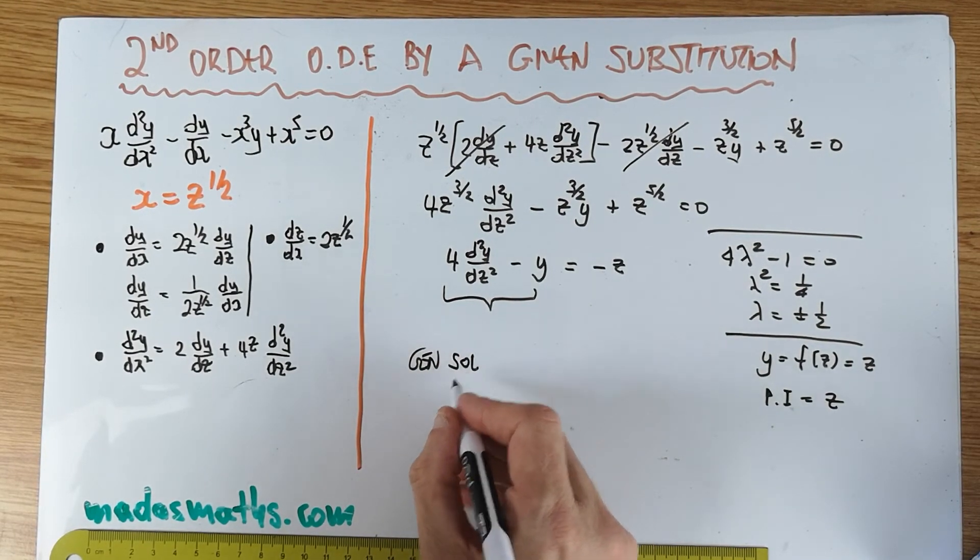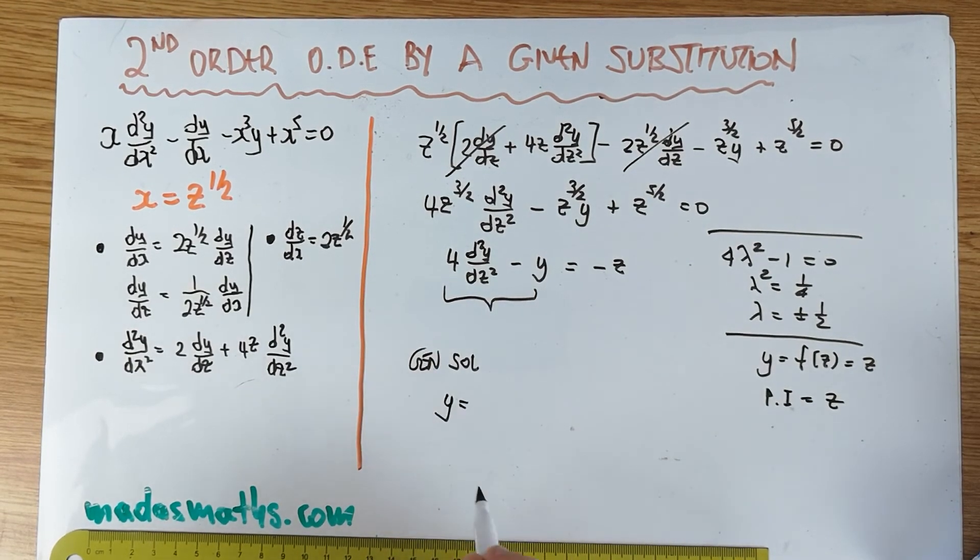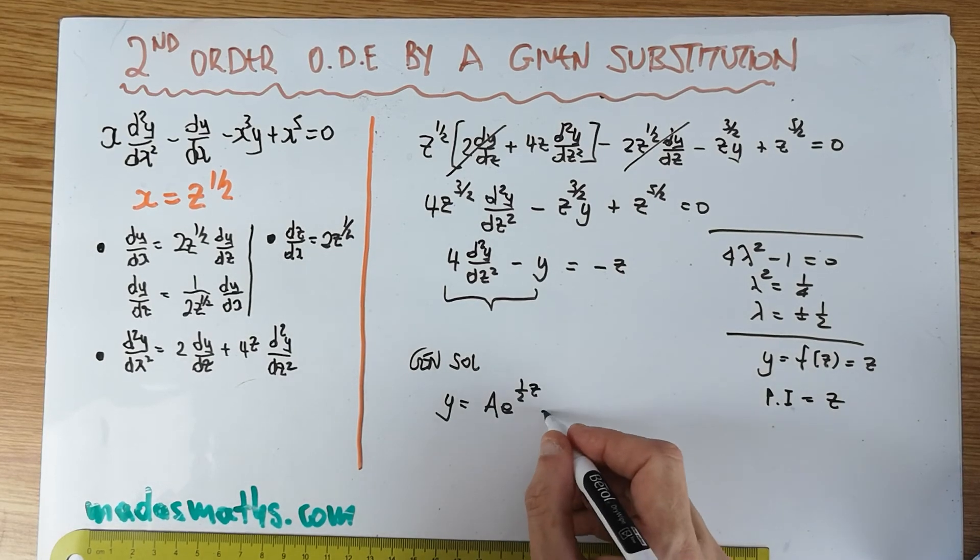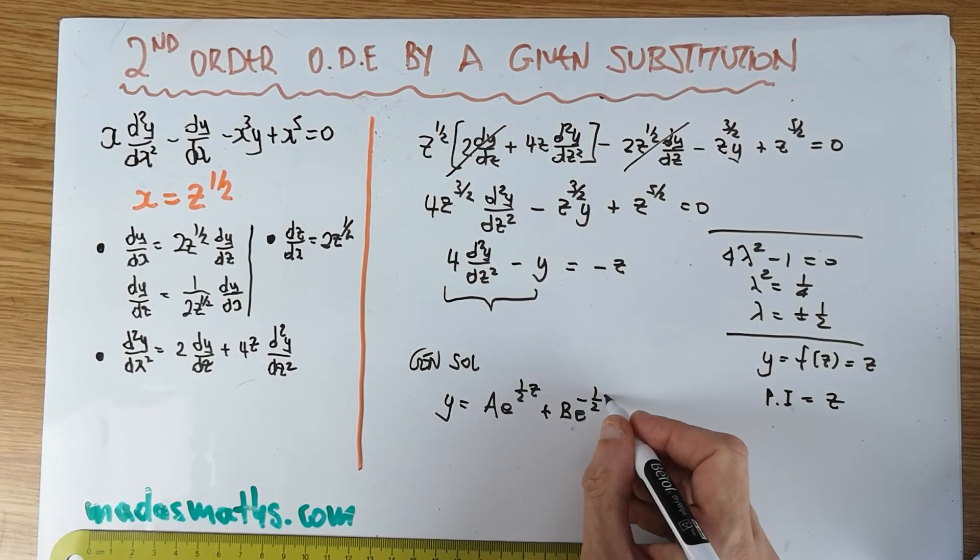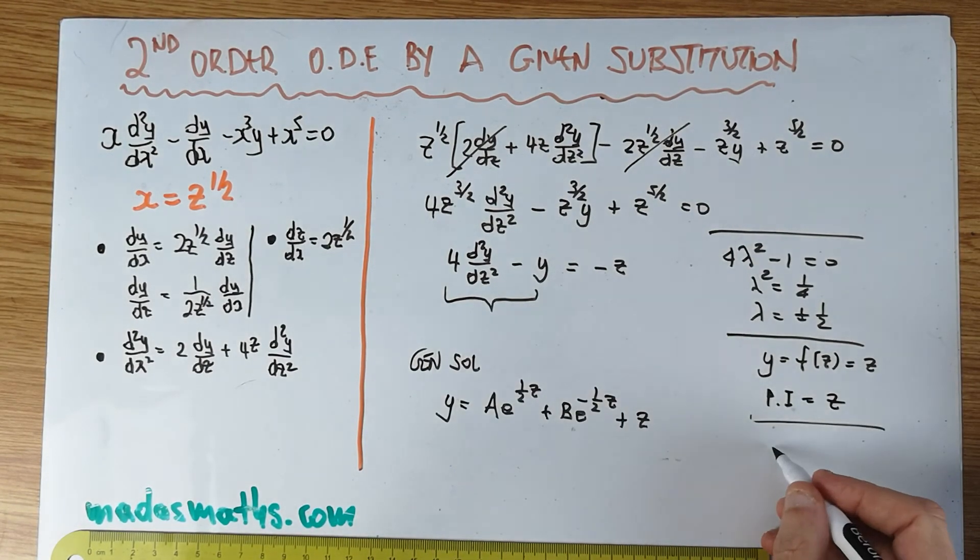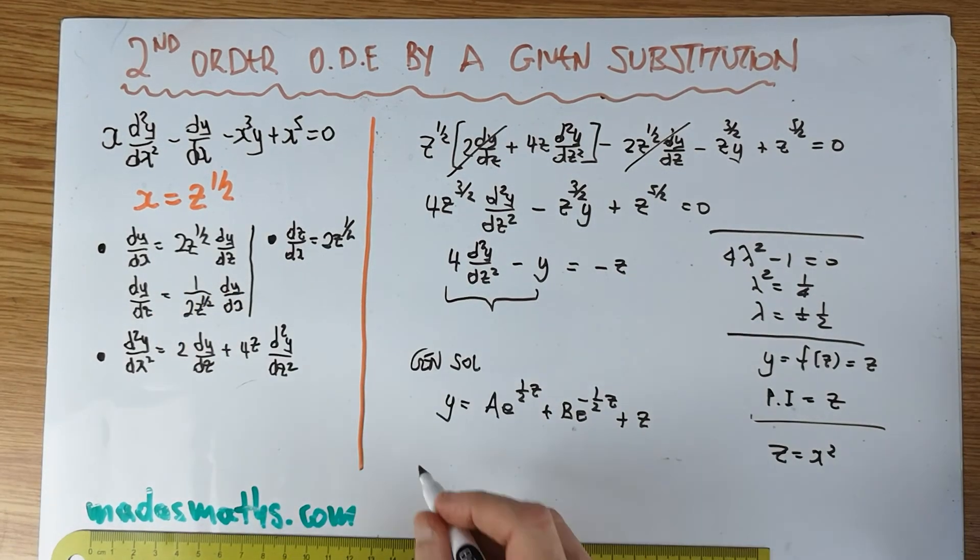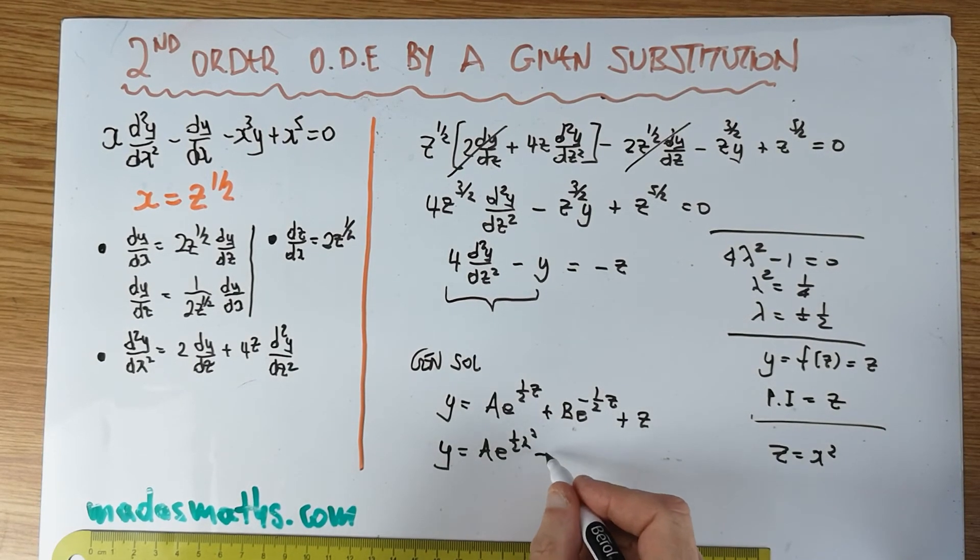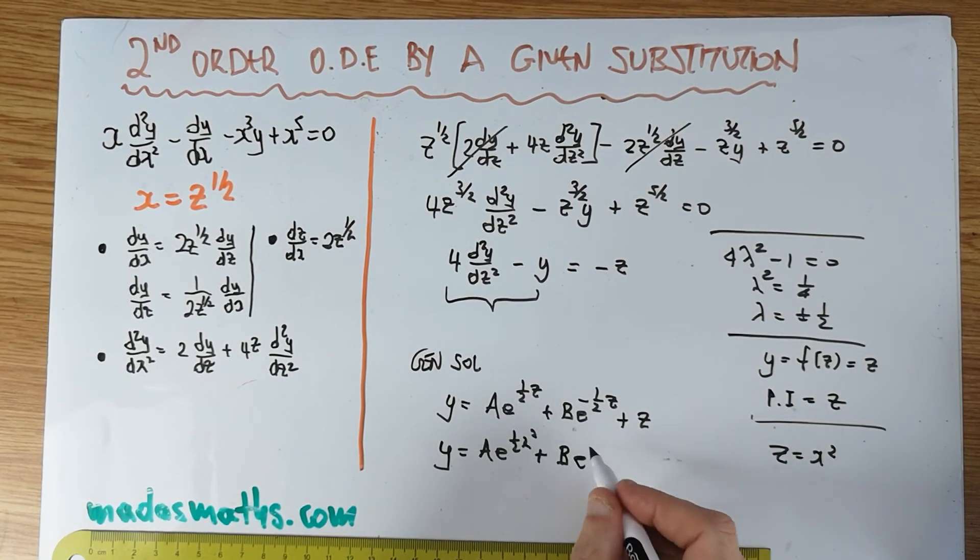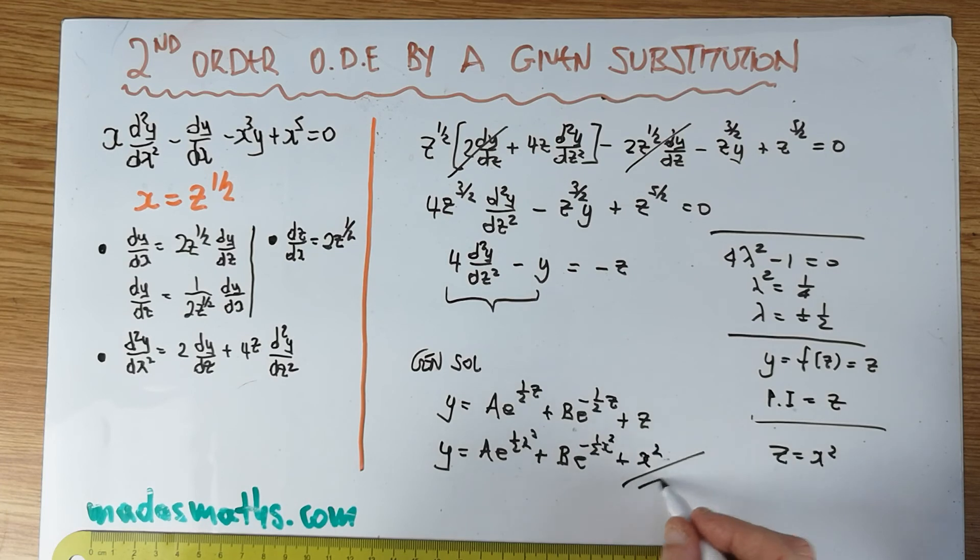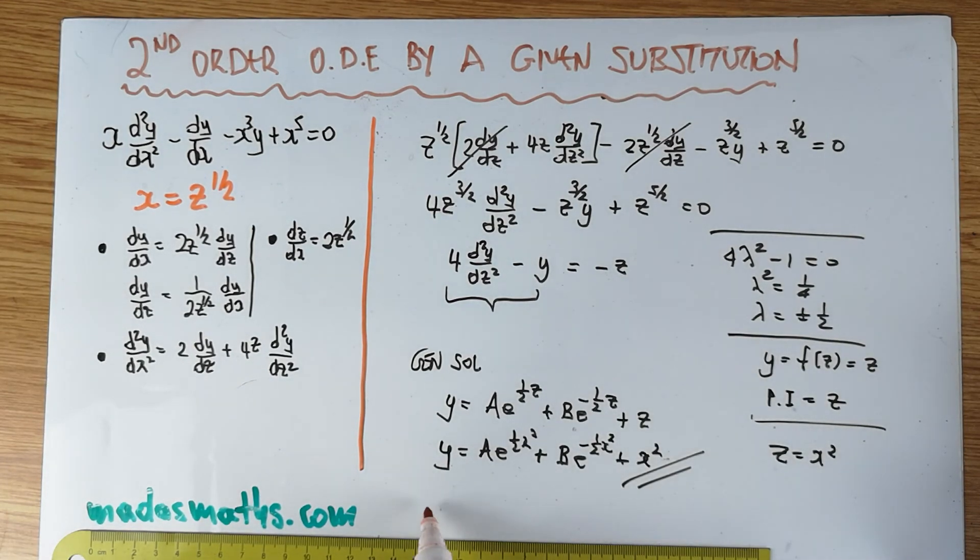then sol is remember we are in y as a function of z so y is equal to a e to the half z plus b e to the minus half z plus of course z. And of course if you look at what z is, z is equal to x squared from the substitution that was given and therefore as far as we're concerned the question has now finished is a e to the half x squared. Someone's annoying at my door, don't they know that I get angry at this time when I'm filming. Okay so that's a bit there and of course z is x squared and of course this is